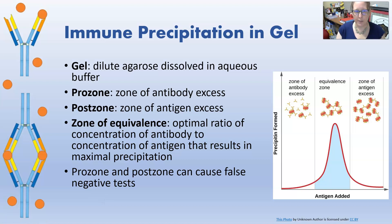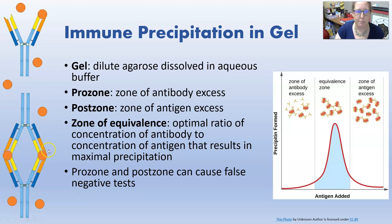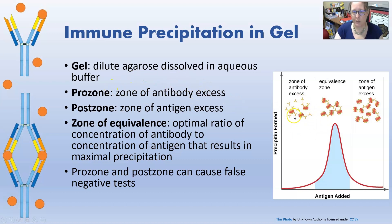The first one is going to be immune precipitation in gel. The gel can be dilute agarose dissolved in an aqueous buffer. In immune precipitation, you have to know there is a prozone, a postzone, and a zone of equivalence. The prozone is the zone of antibody excess, so there's too much antibody in relationship to the antigen for proper precipitation to happen.